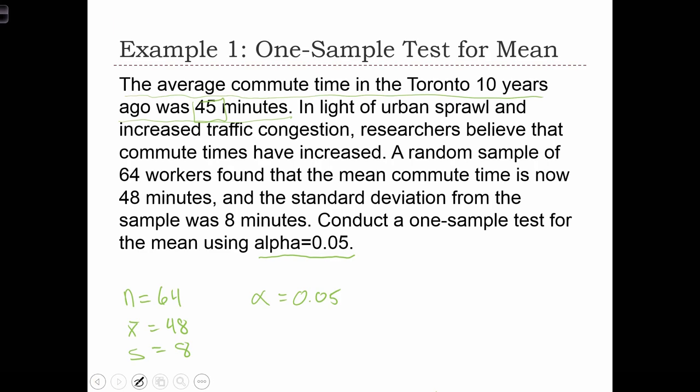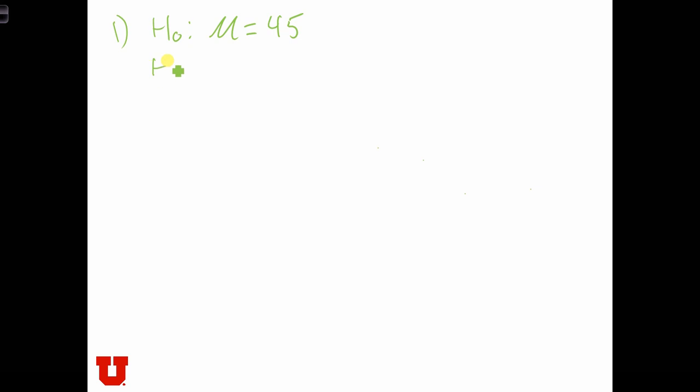The alternative hypothesis can be directional or non-directional. Here, it states that researchers believe that commute times have increased, and therefore, we are looking for an alternative hypothesis. Can we prove that mu is, in fact, greater than 45? Has the average commute time in Toronto gone up from 45? So that's the alternative hypothesis.